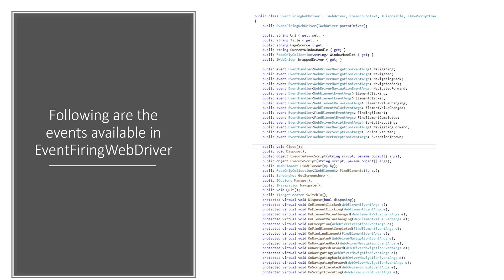Understanding what happens when a particular test fails is another use case. The web driver events available in the EventFiringWebDriver include: Navigating, Navigated, NavigatingBack, NavigatedBack, NavigatedForward, ElementClicked, ElementClicking, ElementValueChanging, ElementValueChanged, and more. There are many different event handlers and event handling methods available.